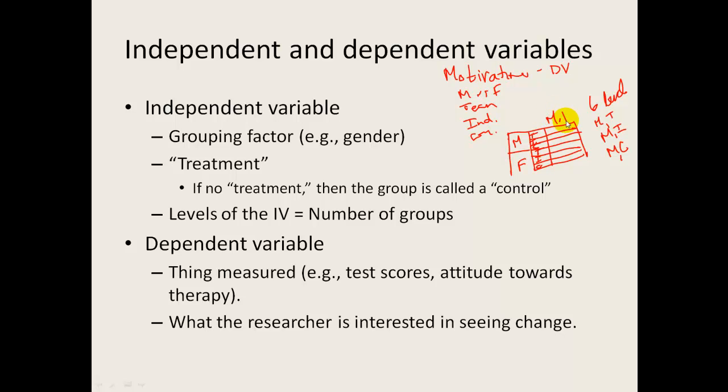Each of these groups would get measured on some sort of dependent variable, variable measure of motivation. And then you could take their average motivation. So I'd have an x-bar for the male team, and x-bar for the male individual x-bar. So you'd end up with six sample means. So that's just kind of an example of how complex you can get an experiment, and the relationship between independent variables and their levels and dependent variables.